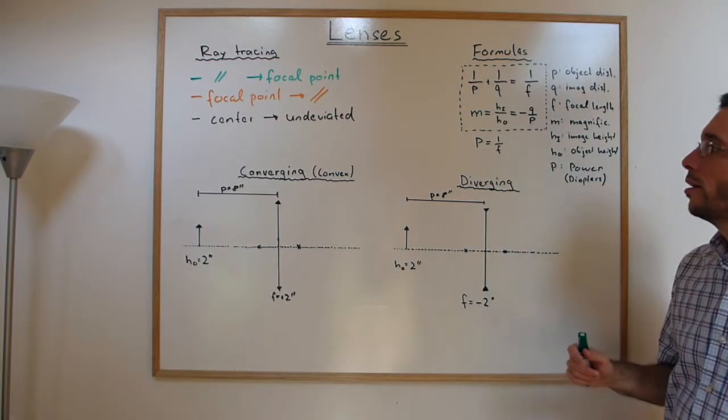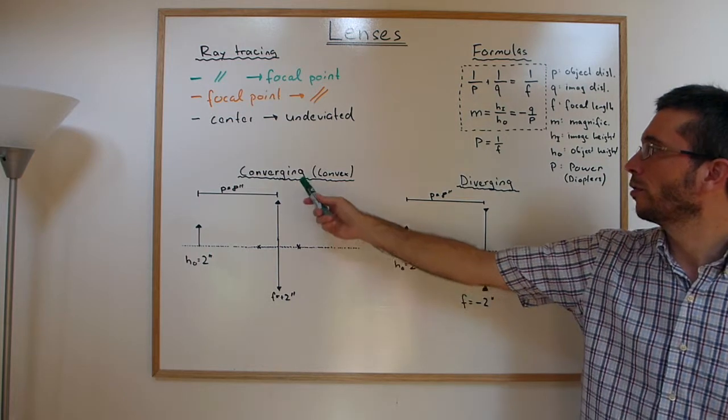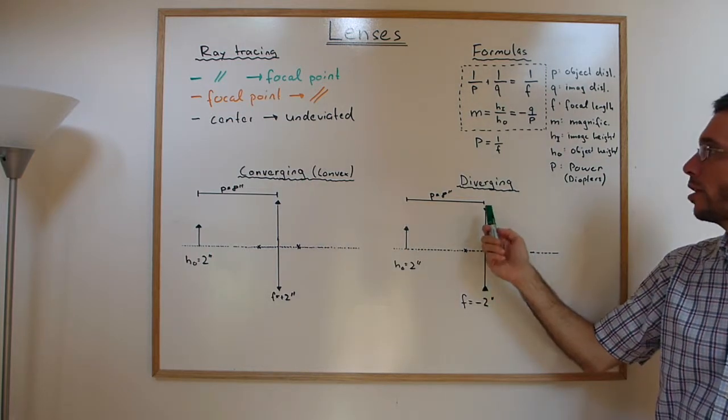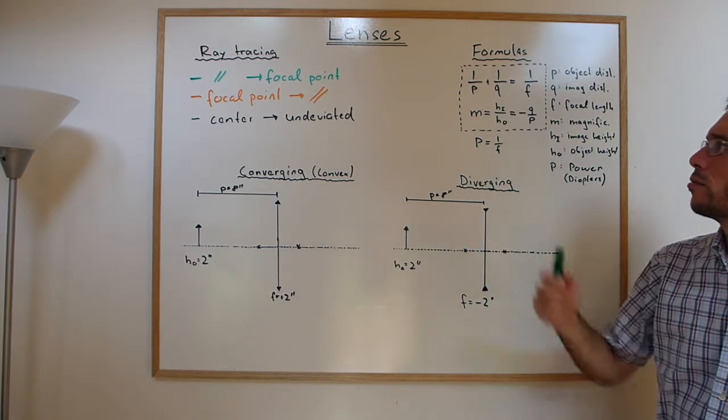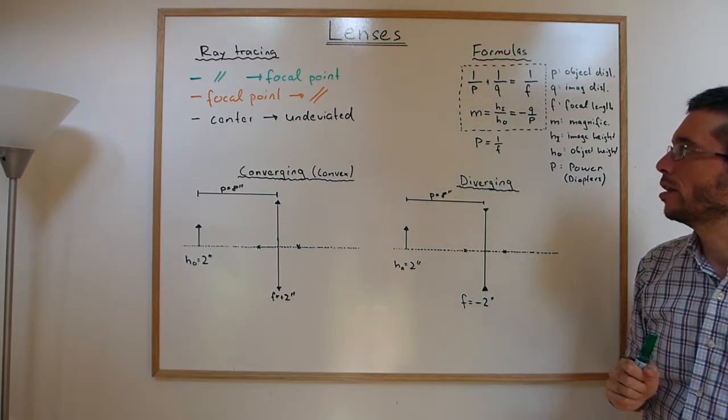One way of finding the images that occur for an object for a converging and diverging lens is ray tracing. There are three principal rays that we can use to find the image.